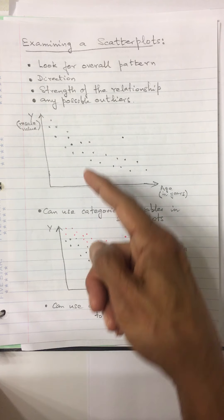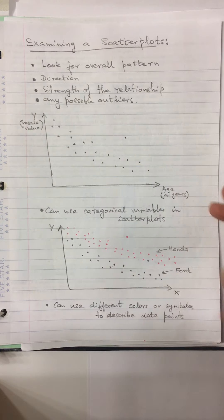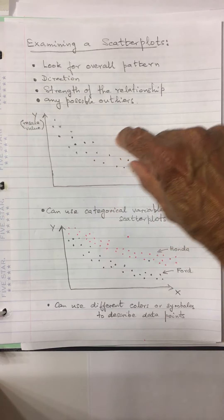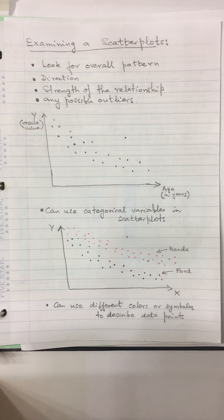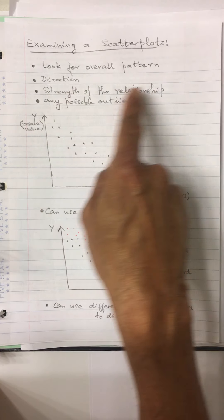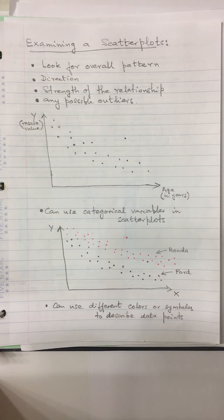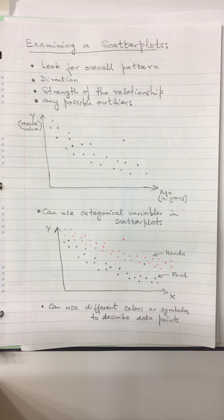The pattern might look like a straight line going down, or it could go up and down — depending on the situation. Some data may have a seasonal effect. Beyond direction, you also look at the strength of the relationship — how closely the data points follow the pattern. Another important thing to look for is any possible outliers.